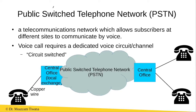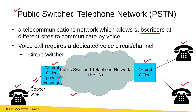The history of telecommunications started with the advent of the fixed telephony network, also called the public switched telephone network (PSTN). Here we have a fixed telephone. The person that uses this fixed telephone is called a subscriber. We can see that this fixed telephone is connected to the local exchange using a pair of copper wires. This local exchange is also called the central office, and the network of these exchanges is called the public switched telephony network.